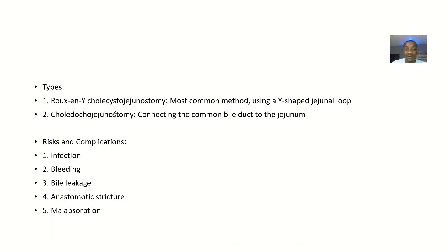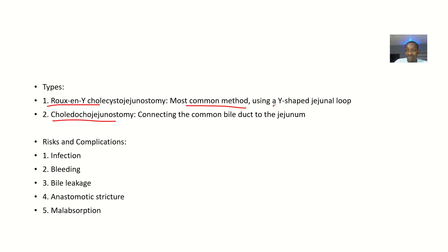Now for the types: we have the Roux-en-Y choledochojejunostomy, which is the most common type, using a Y-shaped jejunal loop. Then we have the choledochojejunostomy, which involves connecting the common bile duct directly to the jejunum.